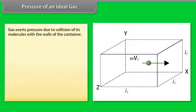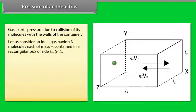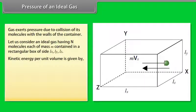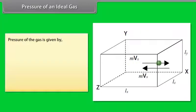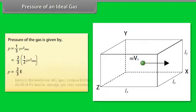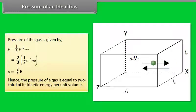Pressure of an ideal gas: Gas exerts pressure due to collision of its molecules with the walls of the container. Let us consider an ideal gas having N molecules, each of mass M, contained in a rectangular box of sides LX, LY, LZ. Kinetic energy per unit volume is given by E equals half rho Vrms square. Pressure of the gas is given by E equals 2 by 3 of E. Hence, the pressure of a gas is equal to two thirds of its kinetic energy per unit volume.